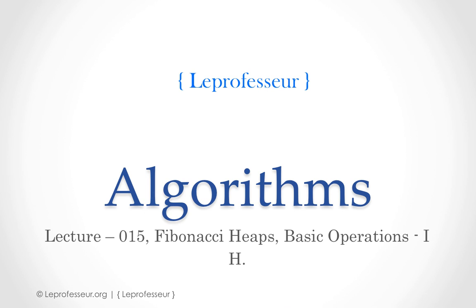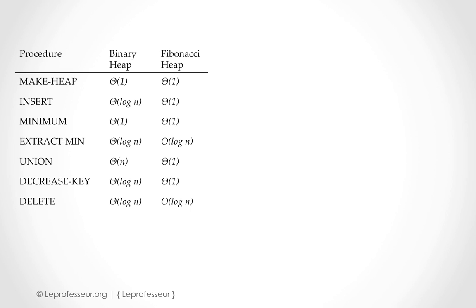Before doing that, let's try to understand: do we really need Fibonacci heaps? We already have a binary heap data structure which we discussed in previous lectures. I have listed a couple of operations here. If you look at the time complexity for binary heap versus Fibonacci heap — for the insert operation, binary heap would take O(log n) in the worst case, compared to Fibonacci heap which takes constant time, Θ(1).